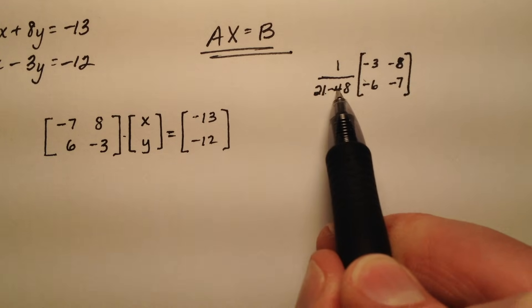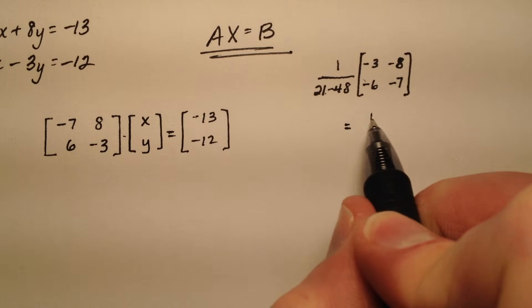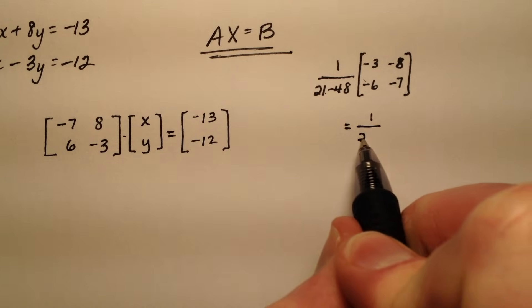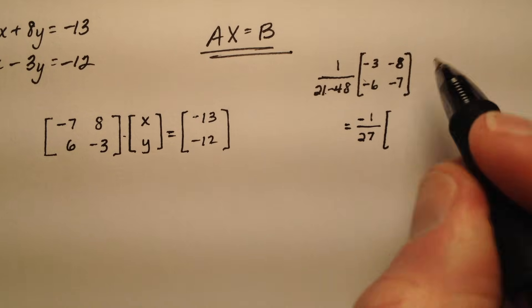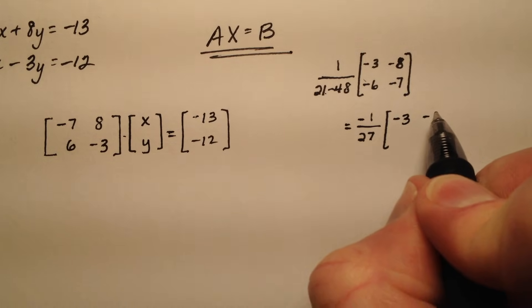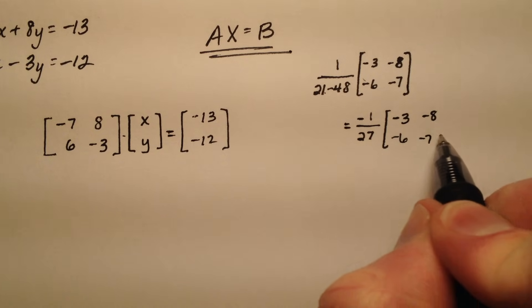So let's go ahead and just simplify this. So 21 minus 48 looks like it's going to be 27, so 1 over negative 27 and then that will be this right there.